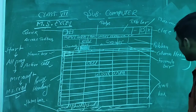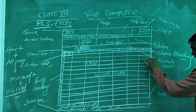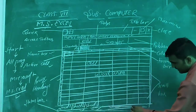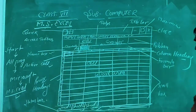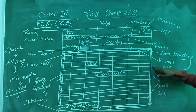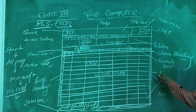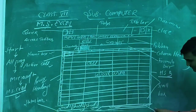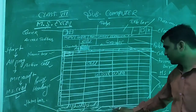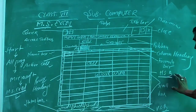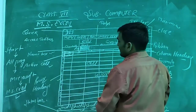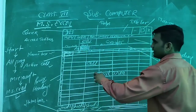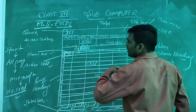On the right side of the window there are two scroll bars. One is the horizontal scroll bar and the other is the vertical scroll bar.